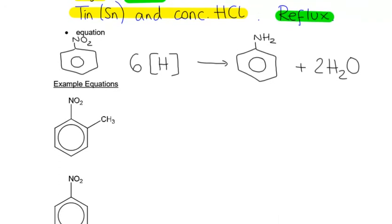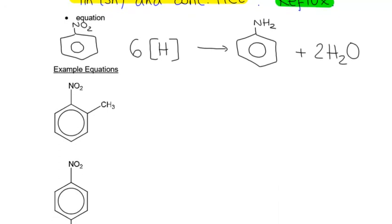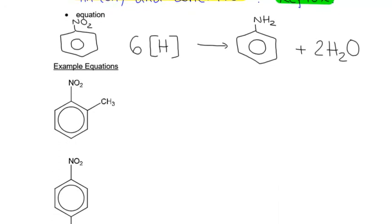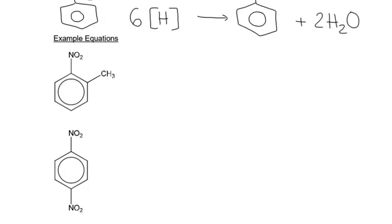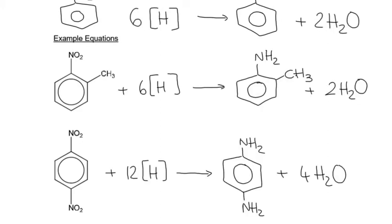Pause the video and have a go at balancing these two example equations, using that reaction as a guide. The first one is very similar — we've just got that methyl group there. The second one, just watch out: there are two nitro groups, so they both get reduced. So you've got twice as many reducing agents and twice as much water at the end.